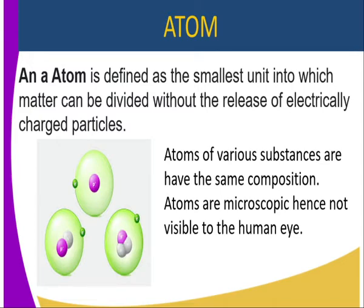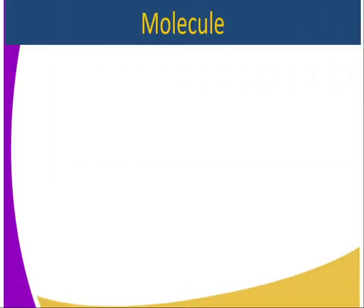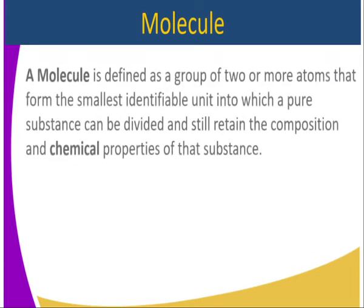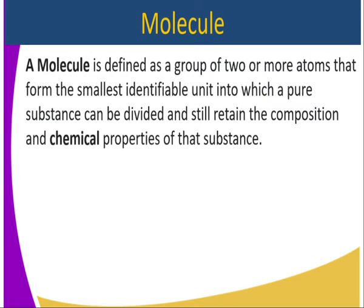Atoms are microscopic, hence they are not visible to the human eye. Once again, an atom is the smallest particle of matter that can take part in a chemical reaction. It is made up of other subatomic particles which we are going to look at in detail.